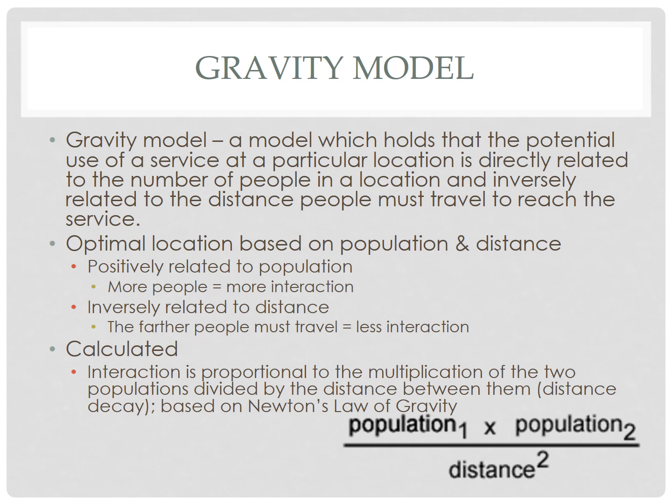The last point about the gravity model as it relates to market location and Central Place Theory: when you diminish the distance — in other words, diminish the range people have to travel — there's going to be more interaction, which means we're more likely to hit the threshold, the minimum number of people needed to support a business. You don't necessarily need a huge population if your range is conducive to what you're trying to do. As distance grows, fewer people make that trip.